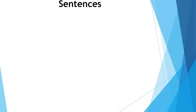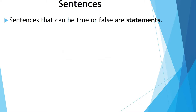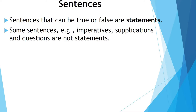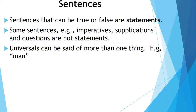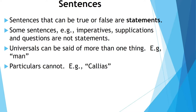Sentences that can be true or false are statements. 'Sentences' is actually a broader category than 'statements' — statements can always be true or false. But some sentences, like imperatives ('go shut the door'), supplications ('please shut the window'), and questions ('did you shut the door?'), are not statements — they are not the kinds of things that can be true or false. He also notes that some names are universals — they can be said of more than one thing. For example, the name 'man' can apply to several different things, whereas particular names like 'Callias' don't apply to more than one thing.